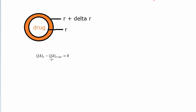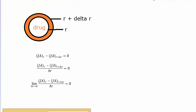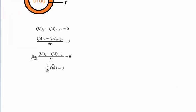A is a function of R, so it cannot be pulled out and we can't divide by A to cancel it out. What we can do is divide by delta R, then take the limit as delta R goes to zero. Taking that limit is equivalent to taking the derivative of whatever is inside — in this case J times A. So the derivative of J times A with respect to R equals zero, which means J times A is constant with respect to R.